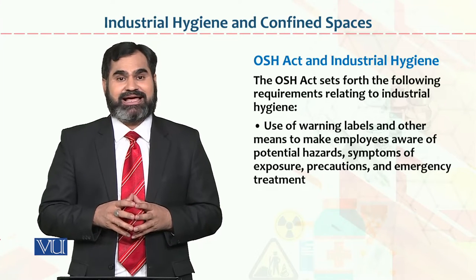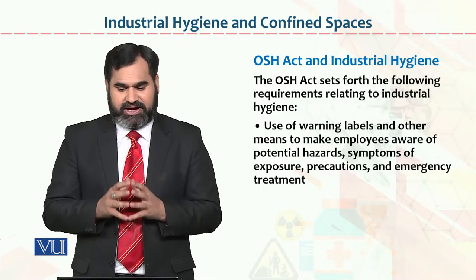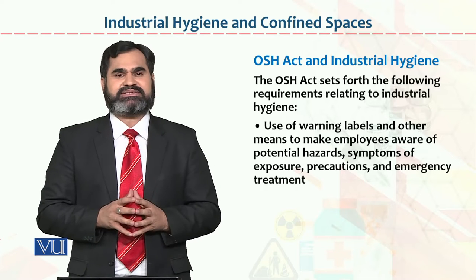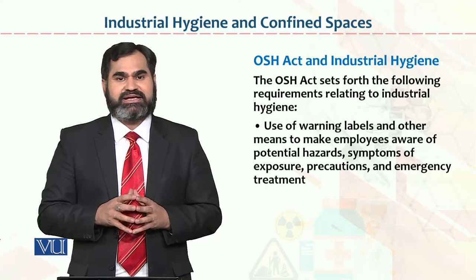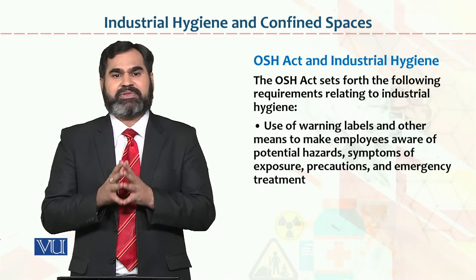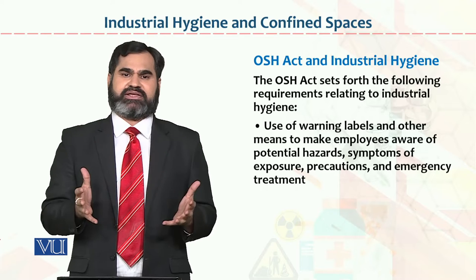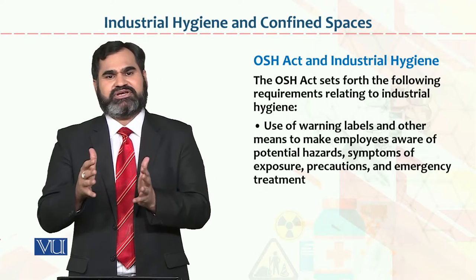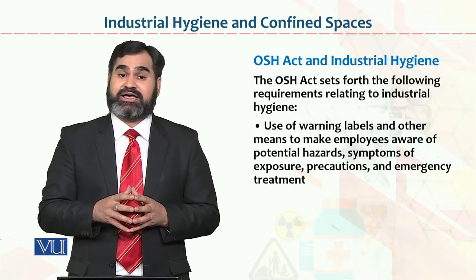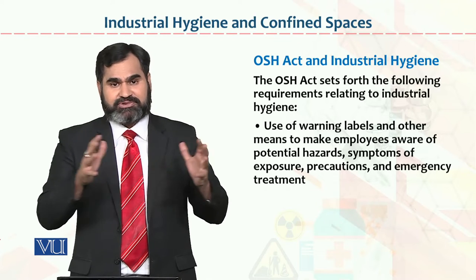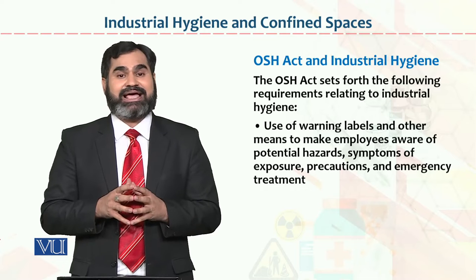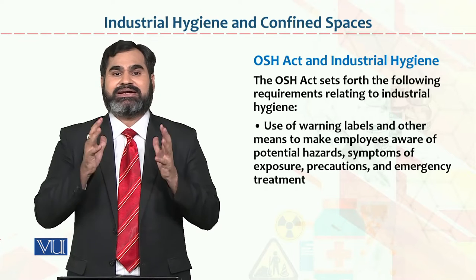Occupational Safety and Health Act forces the following requirements relating to industrial hygiene. یہ Act United States of America میں بنی ہوئی ہے اور اس کا primarily purpose industrial hygiene کو check کرنا ہے. اگر industrial hygiene available ہے تو Occupational Safety and Health Act اپنے objectives achieve کر رہا ہے، اور اگر industrial hygiene تمام چیزوں میں exist نہیں کر رہی تو یہ Act اپنے فرائض سہی طریقے سے انجام نہیں دے رہا.